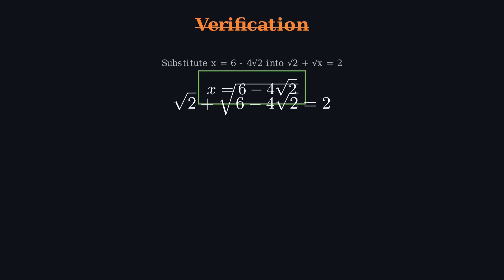Now, it's always a good idea to double check our solution. Let's plug this value of x back into the original equation. So we check if √2 plus √(6 minus 4√2) really equals 2. Interestingly, that inside square root simplifies perfectly to 2 minus √2.